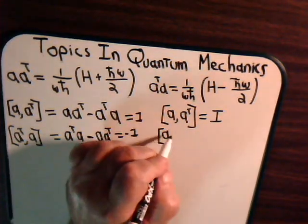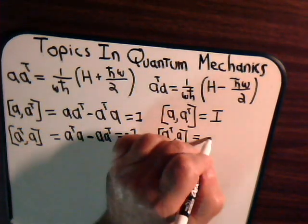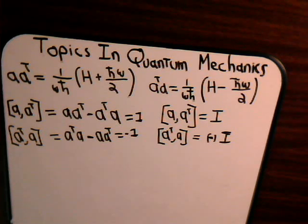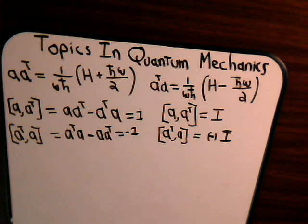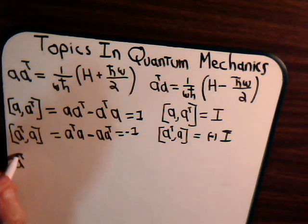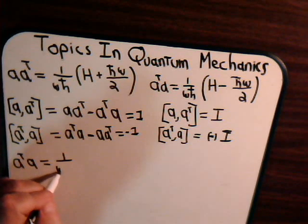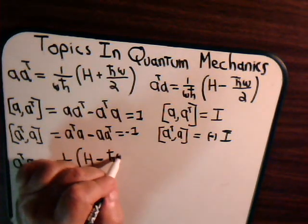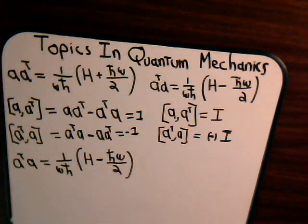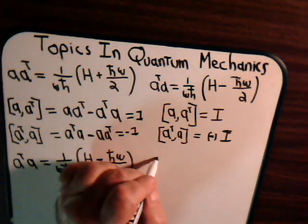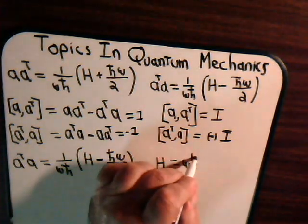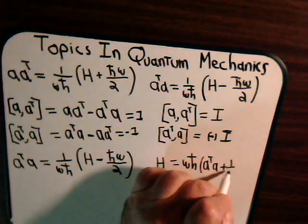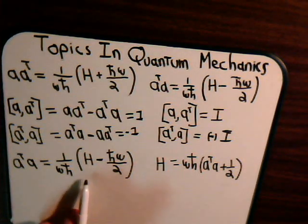We can say that the commutator a-dagger a is equal to the negative of the identity operator. Now, a-dagger a equals 1 over omega h-bar times the Hamiltonian minus h-bar omega divided by 2. And if we solve this for the Hamiltonian, we have H equal to omega h-bar times a-dagger a plus one-half. Let's solve this equation for H.